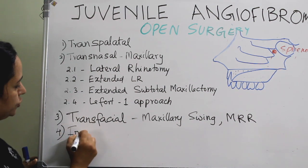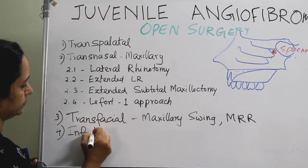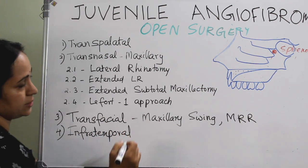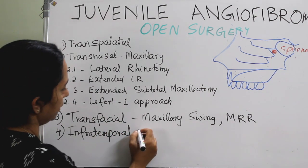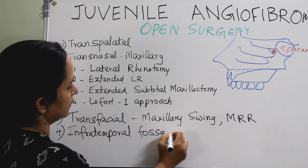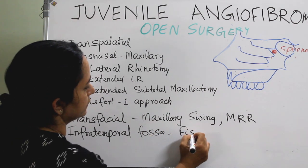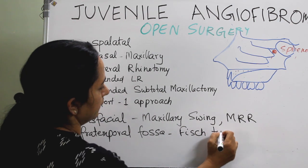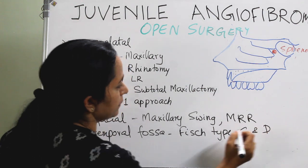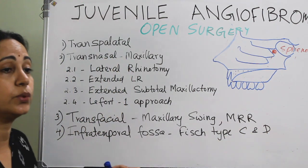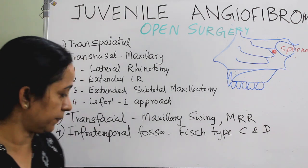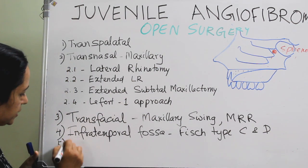The infratemporal fossa approach is used depending upon the extension of the tumor. Fisch type C and D infratemporal fossa approaches are most commonly used in extensive JNA. Next is craniofacial resection.